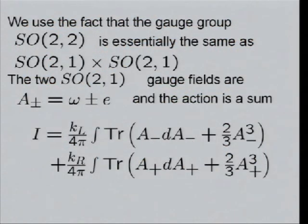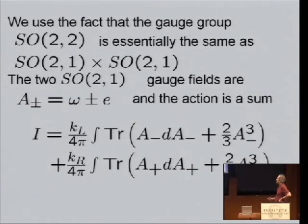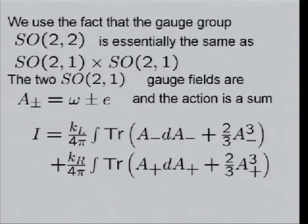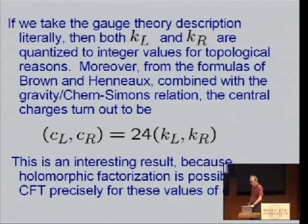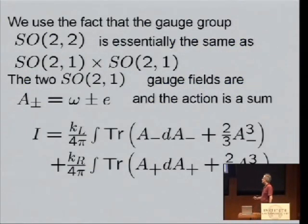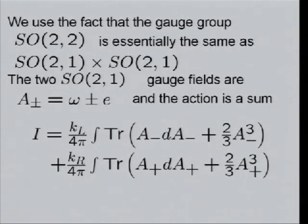Remember, in the gauge theory interpretation, the gauge group was SO(2,2), but in four dimensions, this 2 is really the number of space dimensions. So in 3 plus 1 dimensions, it would have been SO(3,2). Precisely because there are two space dimensions, we have the fact that SO(2,2) is a product of two SO(2,1)s, and the two SO(2,1) gauge fields, I'll call them A plus and minus, or ω plus or minus e, and the action is the sum of two Chern-Simons actions, one for A minus and one for A plus. And if we take the gauge theory description at face value, then both K left and K right are integer valued for topological reasons. To make sure that the action is well-defined mod 2π, K left and K right must be integers.